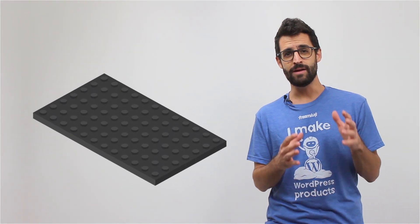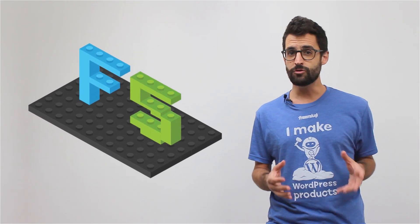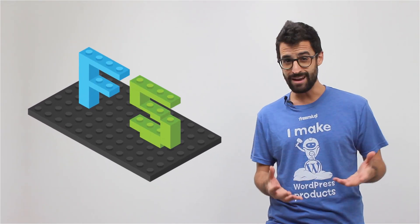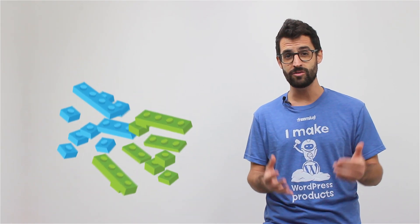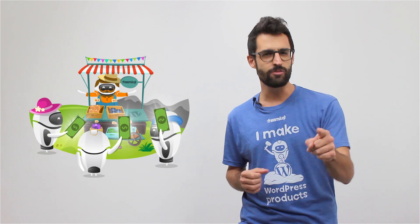How does all of that relate to your WordPress plugin or theme? Think of it this way. The core features of your plugin or theme are like a basic Lego board, and add-ons are features that extend the capabilities of your plugin. Each of the add-ons can be bought separately but none of them can work without the basic core features. Let's plug in!